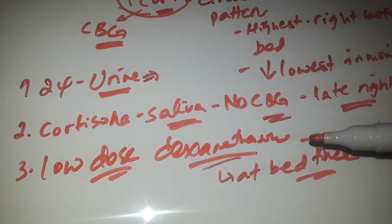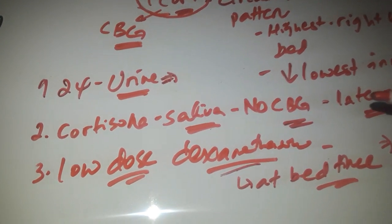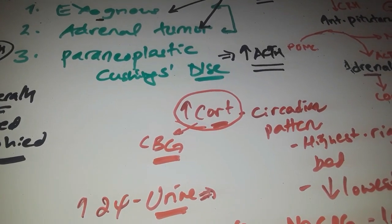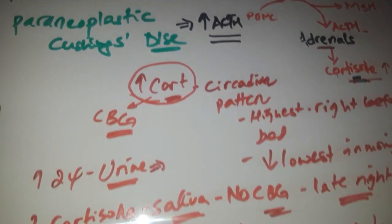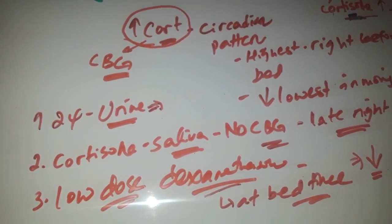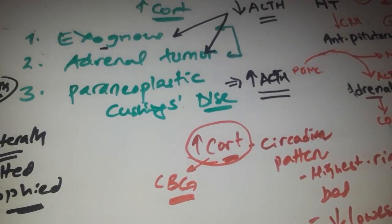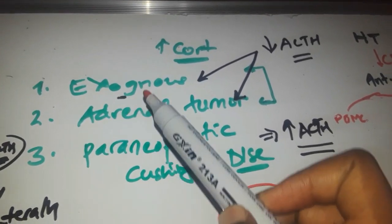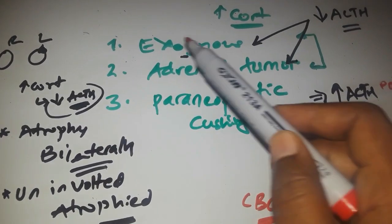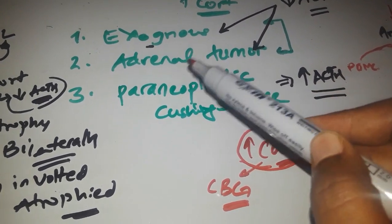If these tests show increased cortisol, we can suspect Cushing's syndrome. But since there are many causes, we must further investigate to identify which one. Once the diagnosis of Cushing's syndrome is established, we measure the amount of ACTH. If ACTH is low, it is either exogenous corticosteroid use or an adrenal tumor, which can be differentiated by history and imaging.